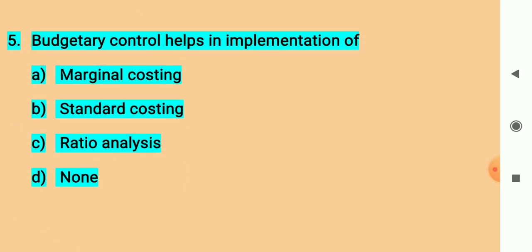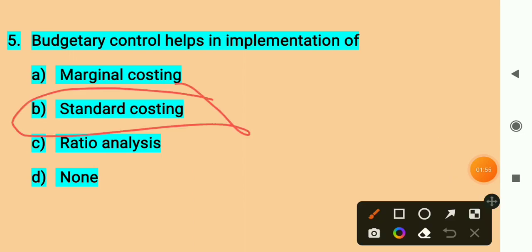Question number five. The budgetary control helps in implementation of - what does budgetary control help us with? The correct answer is option B, standard costing.